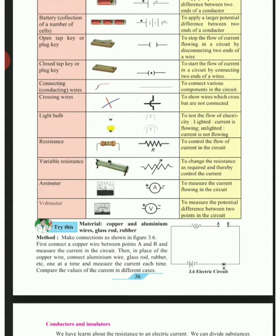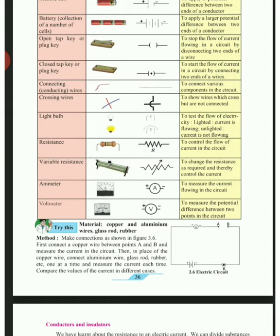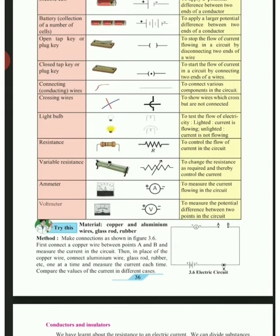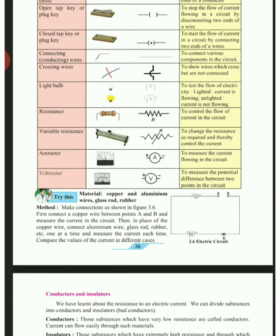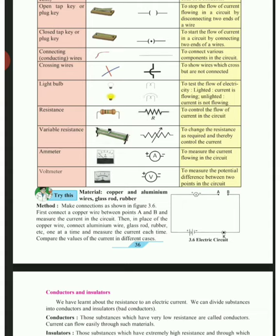Next are the switches — open tap, key, or plug. To turn on and off, we draw a bracket and then two lines. Its use is to stop the flow of current by disconnecting the two ends of the wire. The closed tap, key, or plug has one dot in between the lines, and its use is to start the flow of current in a circuit by connecting the two ends of a wire.